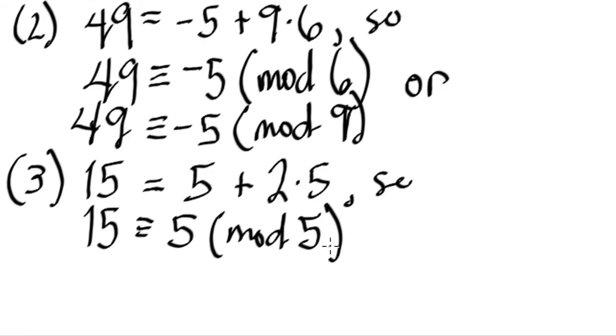Because 15 divided by 5 is going to give us 3 remainder 0. We can check 15 divided by 5 is 3. We can say that 15 minus 5 is indeed going to give us 10, which is divisible by 5. Or also, we can say that 15 is congruent to 5 mod 2.